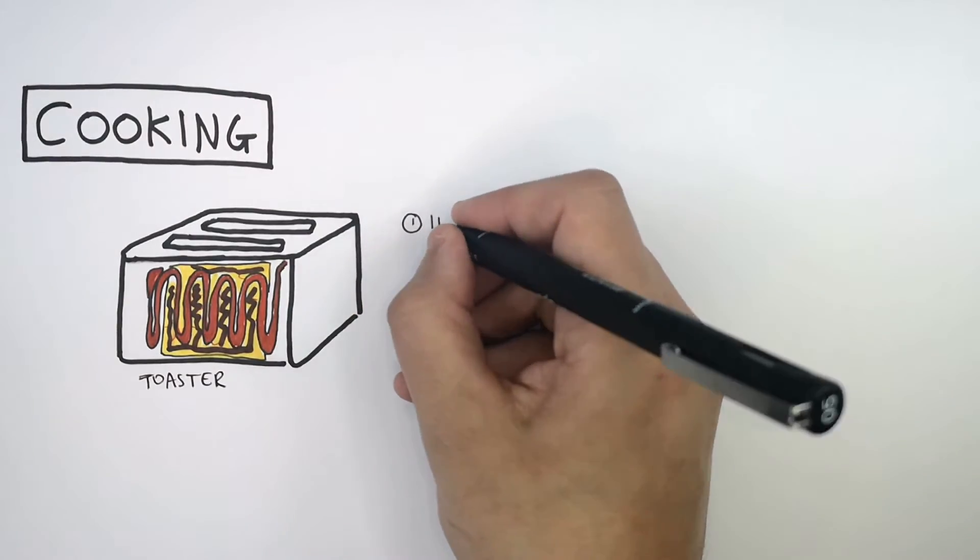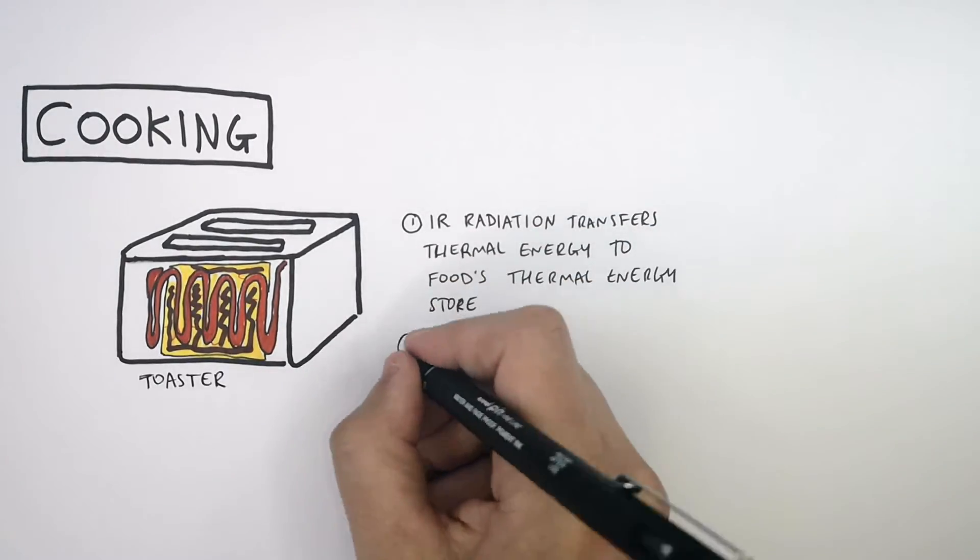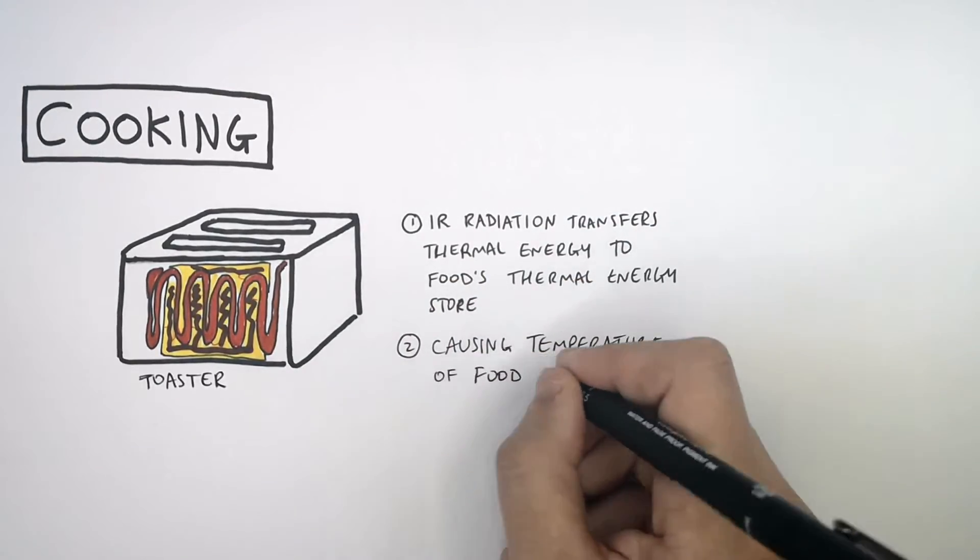So a recap. Infrared radiation transfers thermal energy to the food's thermal energy store, causing the temperature of the food to increase and cook.